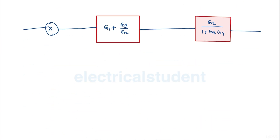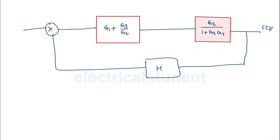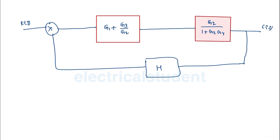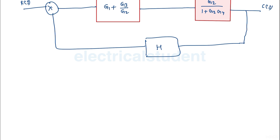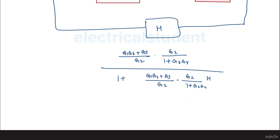The entire thing makes sense now. This is C(s) and this is R(s). The forward path gain is (g1 plus g3 over g2) times (g2 over 1 plus g2*g4), and the overall transfer function is that forward path gain divided by 1 plus that forward path gain multiplied by h.